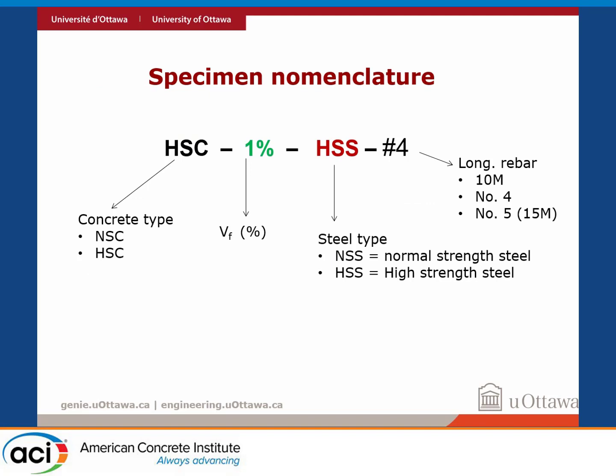This is the nomenclature — I'll go through it fairly quickly. The first part of the name gives the concrete type: NSC or HSC. Then fiber content: 0% means a control column without fiber, 1% means we added 1% fibers. Then the steel type: HSS for high-strength steel, NSS for normal-strength steel. Finally, the longitudinal rebar size: 10M, No. 4, or No. 5, which are increasing in bar area.